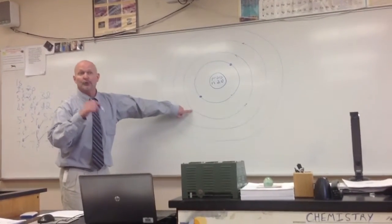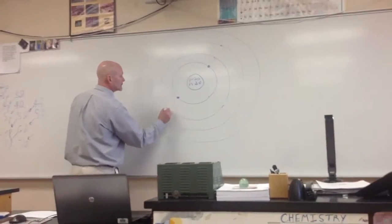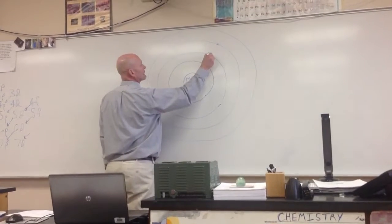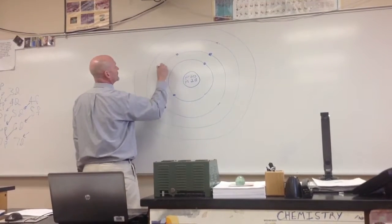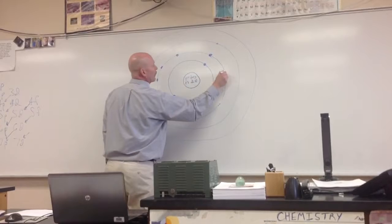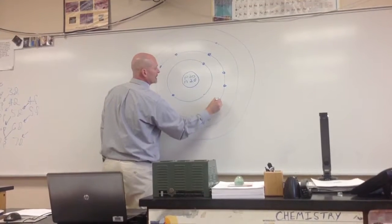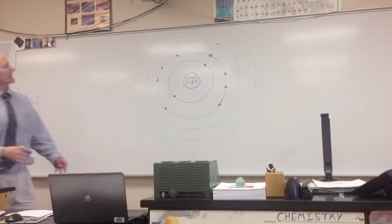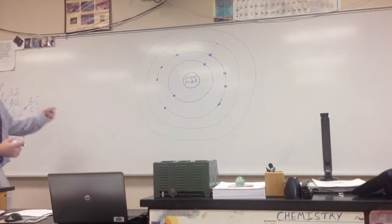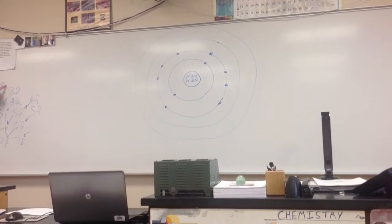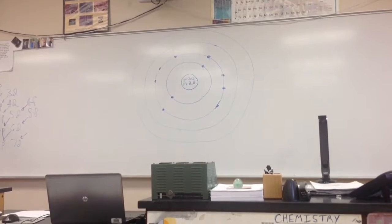Now I go to principal energy 2, 2s2, 2p6. So 2s2, 2p1, 2, 3, 4, 5, 6. Now that I've got the electrons there, and I'm right here, I've got to get to 20, so I'm going to go to 3s2.